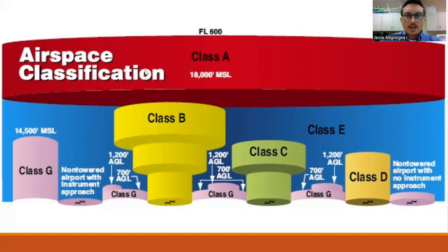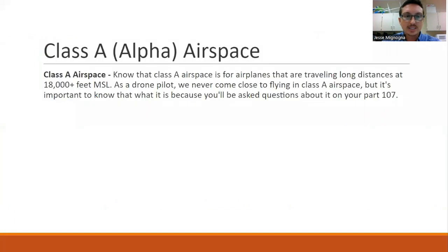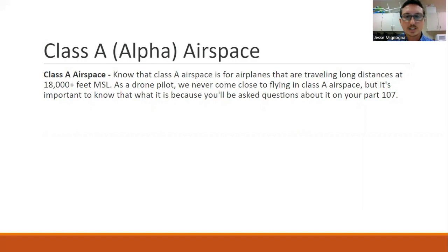Class A airspace — shown up here in red — is for commercial flight. Anything over 18,000 feet MSL (mean sea level), meaning 18,000 feet above sea level, not above the ground, is in class Alpha airspace. Class Alpha is for planes traveling long distances at 18,000 feet above sea level. As a drone pilot, we never come close to flying in class Alpha airspace, but it's important to know for your Part 107 exam.